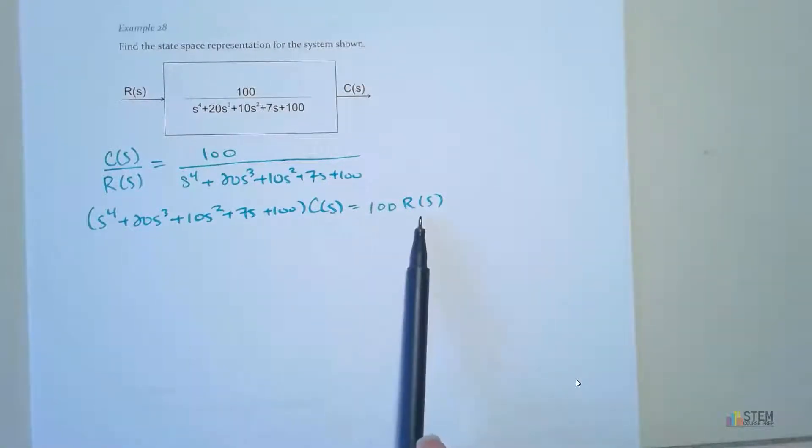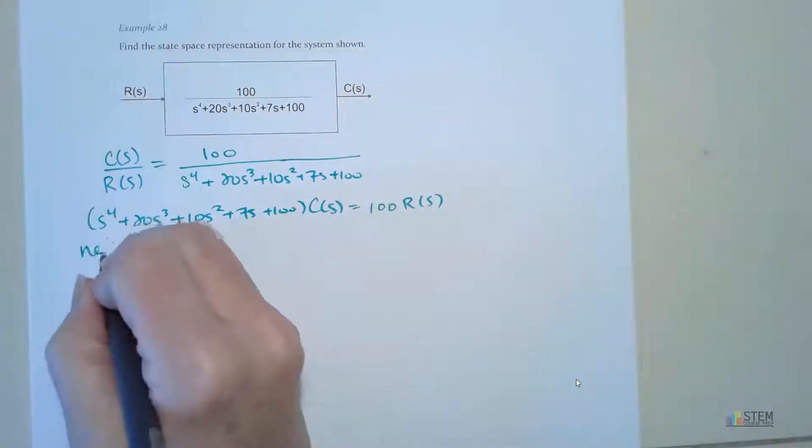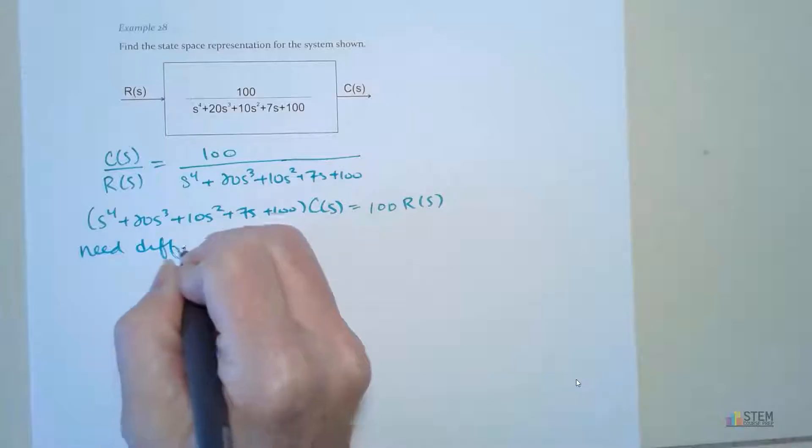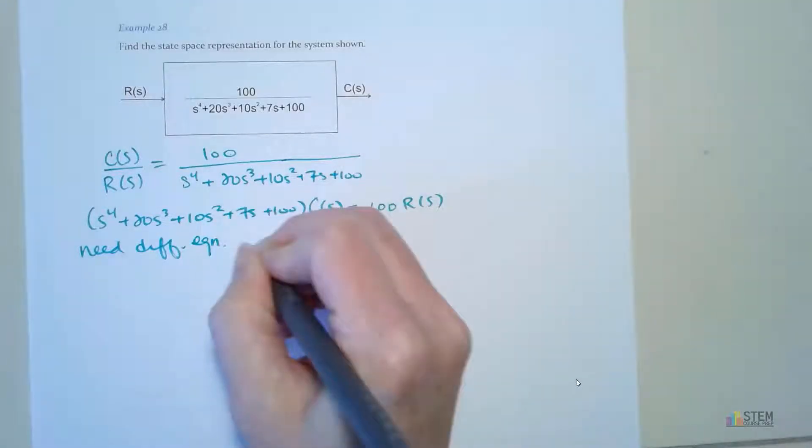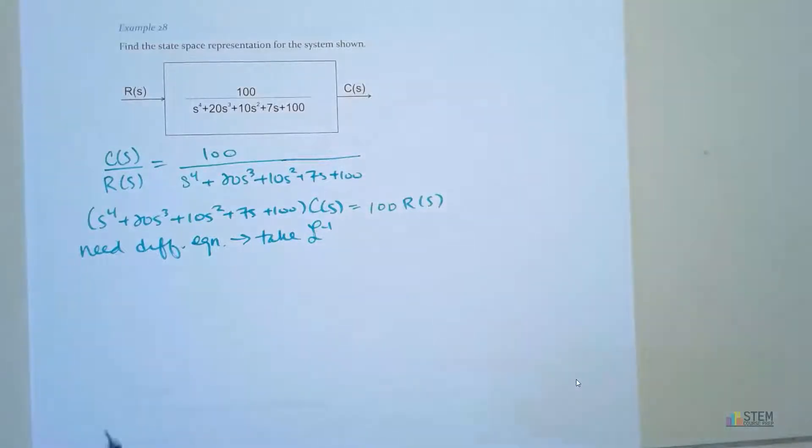Okay, so now we've got this equation. This is essentially the Laplace transform of your equation of motion. Now what we're going to do is basically just do the inverse Laplace of all of these terms. We're going to assume initial conditions are 0. So let's take the inverse Laplace. And this is easy to do. The exponent on s tells you the order of the derivative.